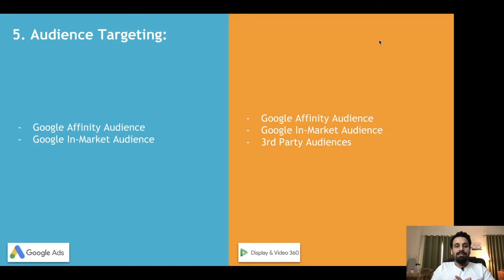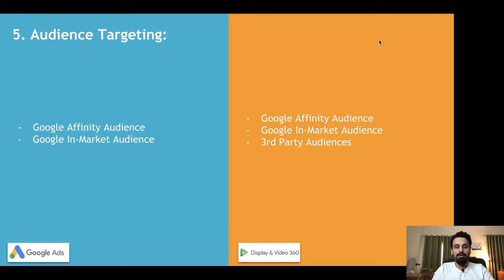The fifth difference is audience targeting, one of the most important aspects of any digital marketing campaign. With millions of devices connected to the internet, it is critical to know which audiences to target. In Google Ads, you have access to Google Affinity Audiences and Google In-Market Audiences. For example, if you watch a lot of football videos on YouTube, Google will flag you as having an affinity toward football.